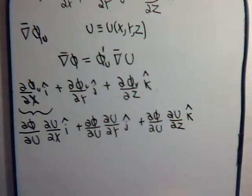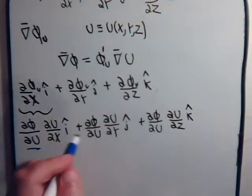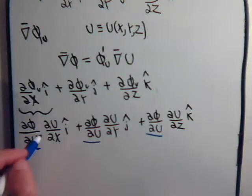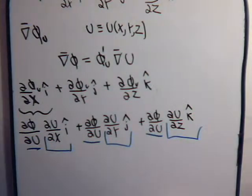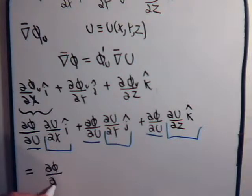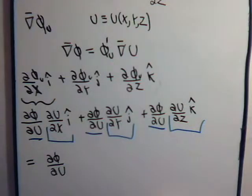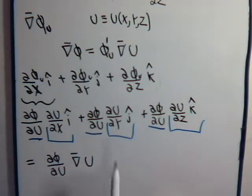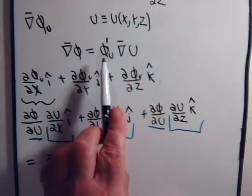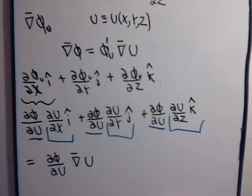So here we can factor out the partial of phi with respect to u, and we're left with the partial of u with respect to x times i, plus the partial of u with respect to y times j, plus the partial of u with respect to z times k — which is just the gradient of u. That's exactly what we were trying to show. Let's clarify with an example.